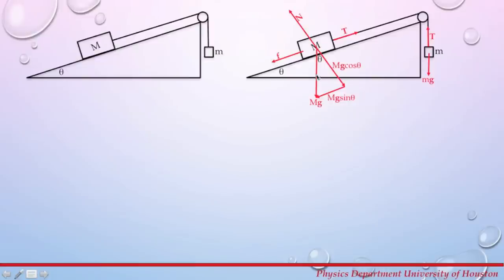We have to decompose the gravitational force vector into two components. As you may recall from vectors, the sum of these two component vectors gives the original vector. The angle of inclination is theta. So this component would be mg cosine theta, and this component would be mg sine theta.